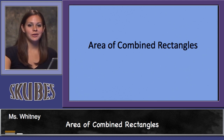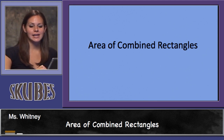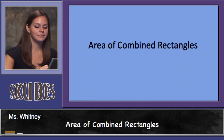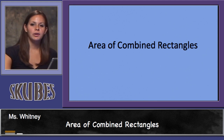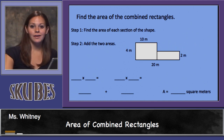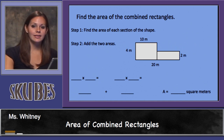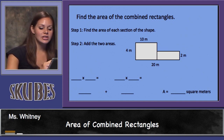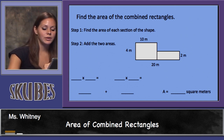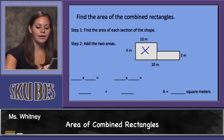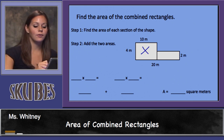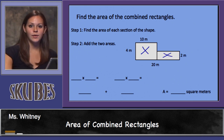Let's find the area of combined rectangles. When you find the area of combined rectangles, first you have to find the area of each section of the shape. In this shape, we need to find the area of this rectangle and this rectangle.